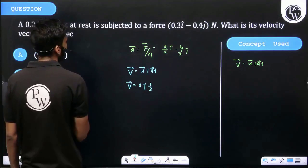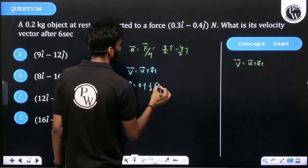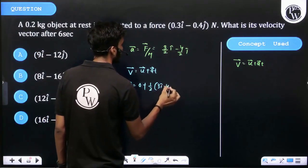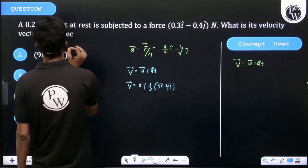3 I minus 4 J. And time is given 6 seconds.